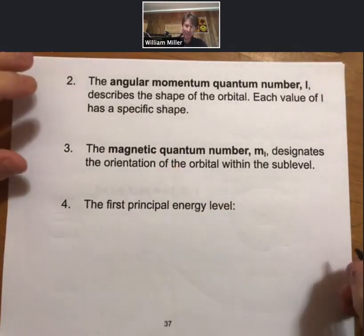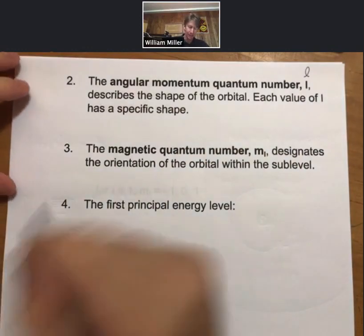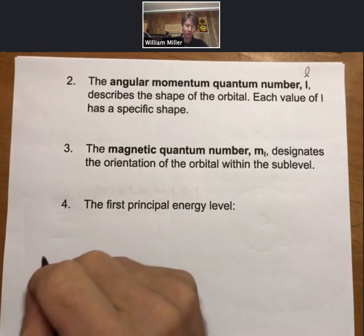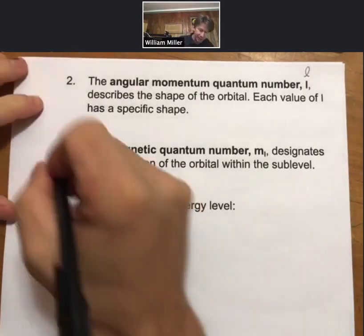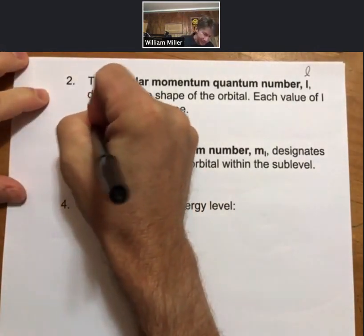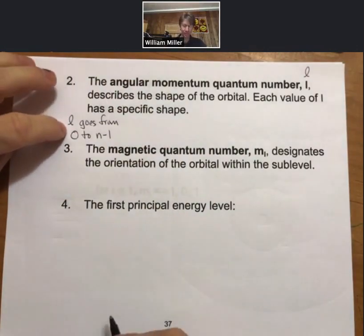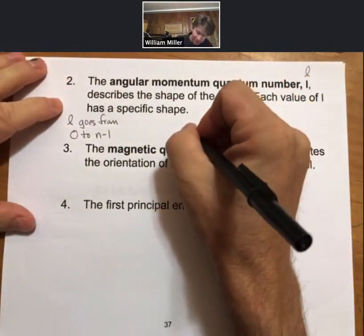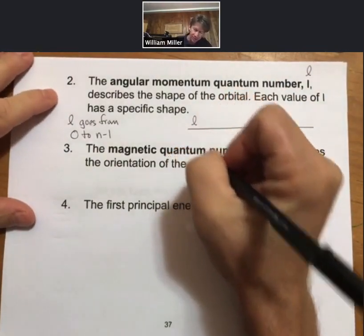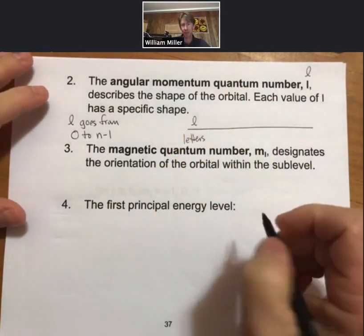Now, the angular momentum quantum number is L. And oftentimes when I write it at least, I'll use the cursive letter L. L describes, the angular momentum quantum number describes the shape of the orbital. Each value of L has a specific shape. So there's two things we want to say about this. First off, so L goes from 0 to n minus 1.